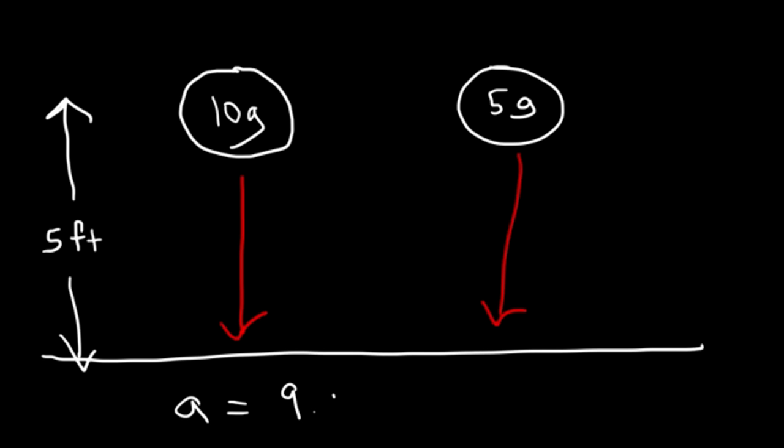The acceleration due to gravity is 9.8 meters per second squared. We'll talk more about that later, but because everything is the same - the height is the same, the acceleration is the same - if you take away air resistance, both objects will hit the ground at the same time.